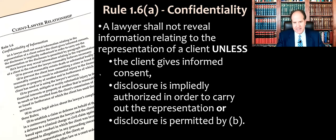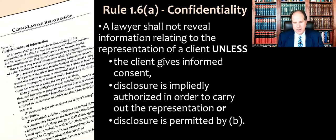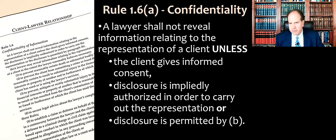Rule 1.6a says that a lawyer shall not reveal information relating to the representation of a client unless one of three caveats applies: first, the client gives informed consent; second, the disclosure is impliedly authorized in order to carry out the representation; or third, disclosure is permitted by section B, which covers exceptions.